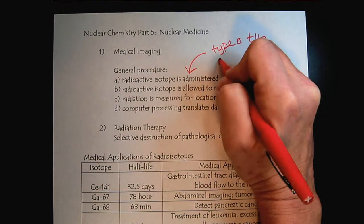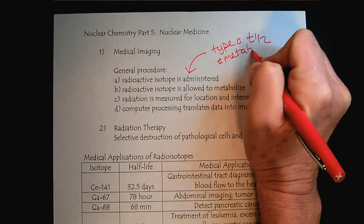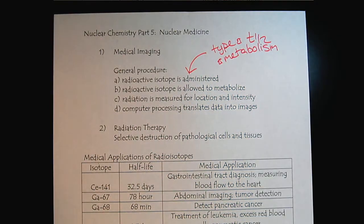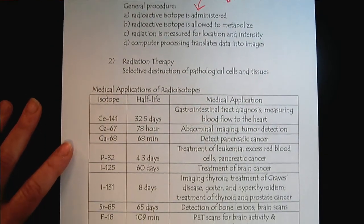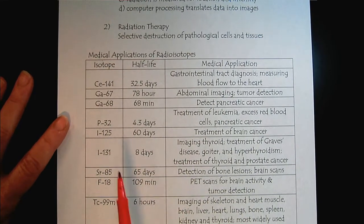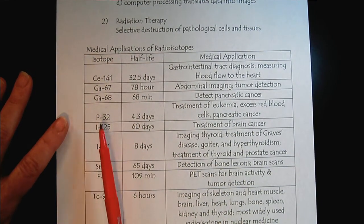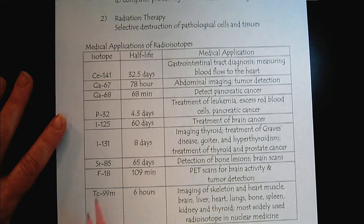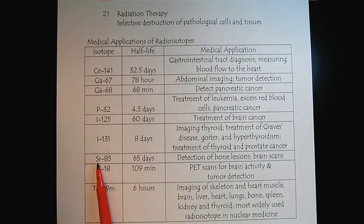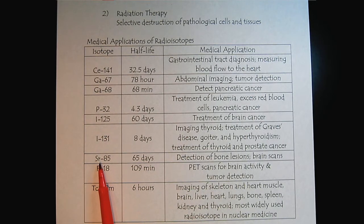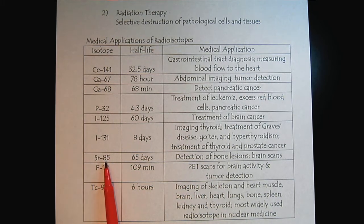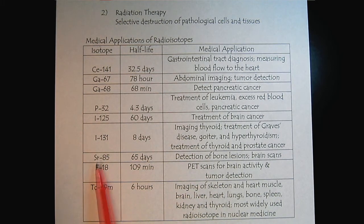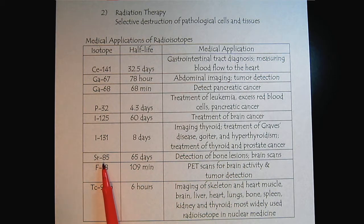We'll also look at the metabolism. Looking at some various medical applications of radioisotopes — for example, strontium. Strontium is an alkali earth metal, similar to calcium in our bones. So it would make sense to use a radioisotope like strontium to look for bone lesions, because alkali earth metals have similar chemistry.